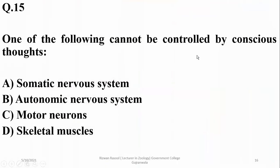One of the following cannot be controlled by conscious thoughts — these are functions of the autonomic nervous system.